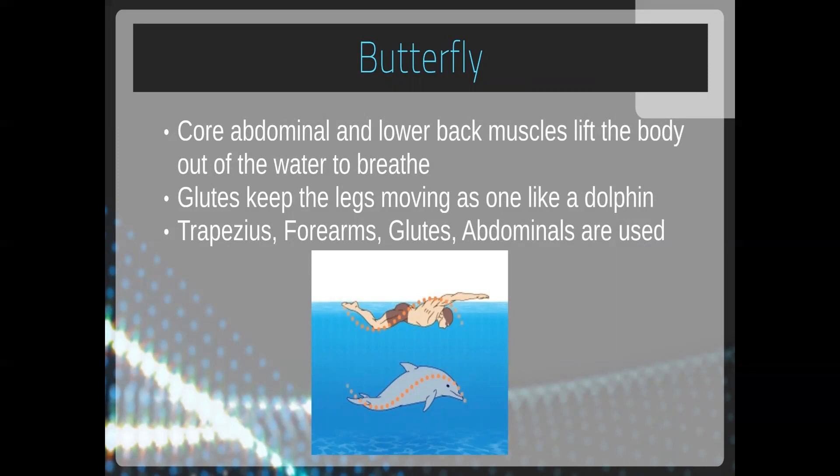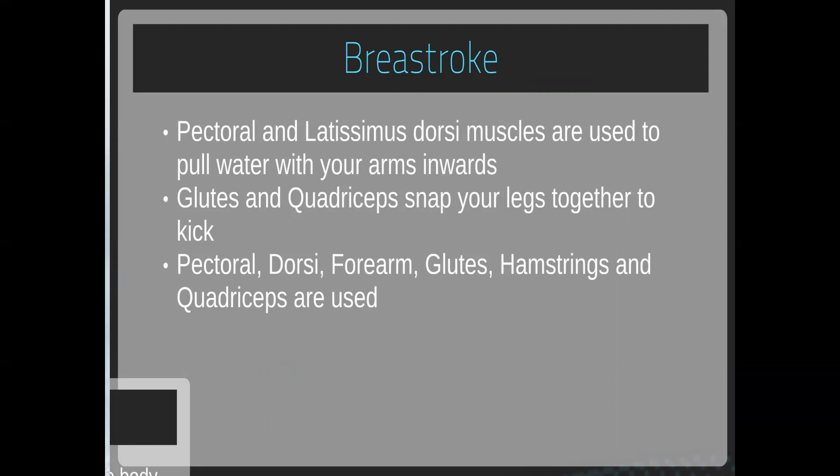For breaststroke, pectoral and latissimus dorsi muscles are used to pull water with the arms. Gluteus and quadriceps snap the legs together to kick. The pectoralis, latissimus dorsi, forearm, gluteus, hamstring, and quadriceps muscles are all used in breaststroke.